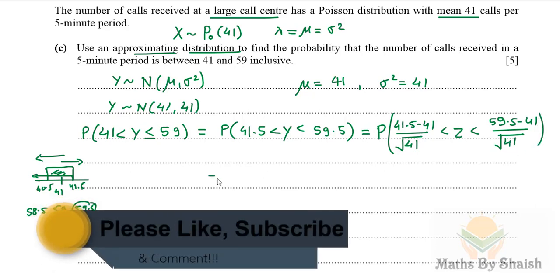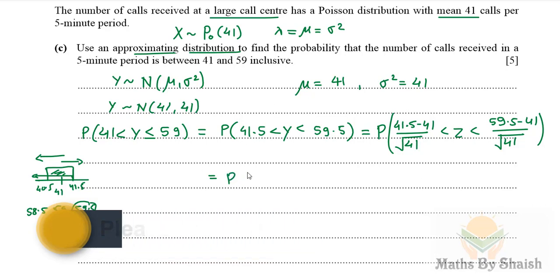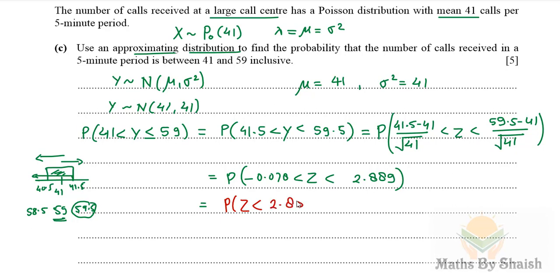Now we will calculate this, and its value to three decimal places is going to be Z is greater than minus 0.078 and less than 2.889. And this is going to be probability of Z less than 2.889 minus probability of Z less than minus 0.078.